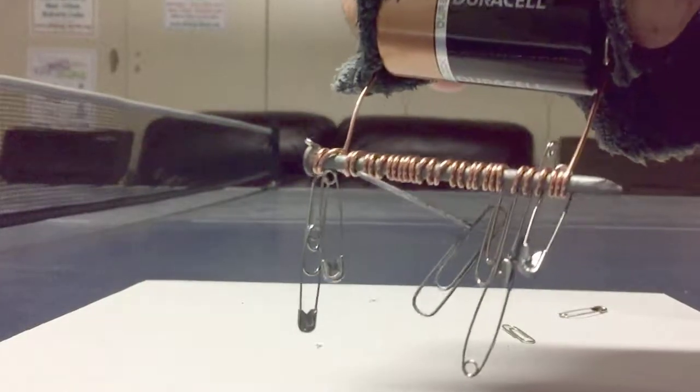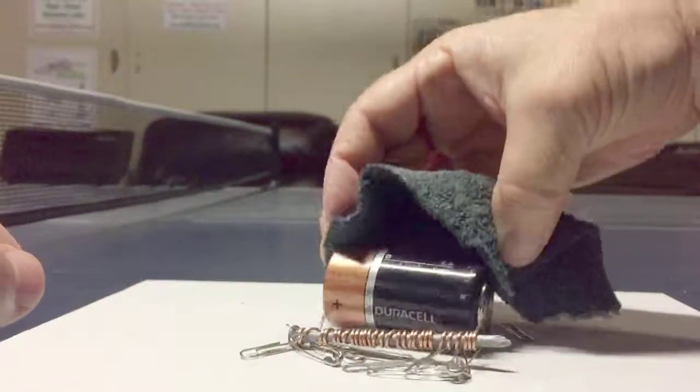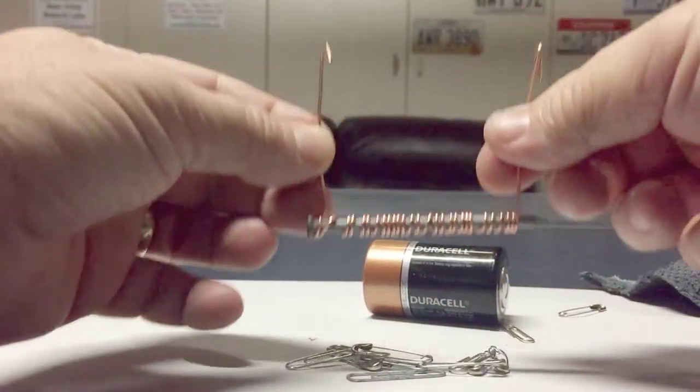This is possible because electricity is flowing through the copper wire and it passes through the iron nail, which makes it magnetic. Electromagnetic.